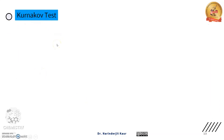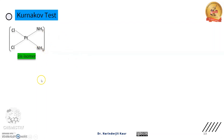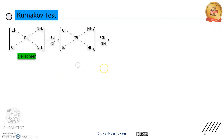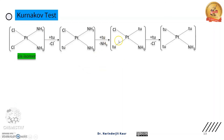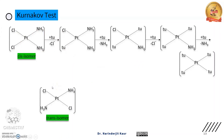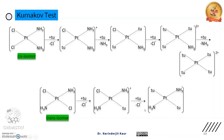Next है Kurnakov test — यह एक interesting application है of trans effect जो help करती है to distinguish between cis and trans isomers of square planar complexes. Complex को thiouria के साथ treat करते हैं। अगर cis complex है, तो सारे ligands will get replaced by thiouria. Whereas अगर trans isomer है, तो reaction two steps के बाद ही stop हो जाएगी।